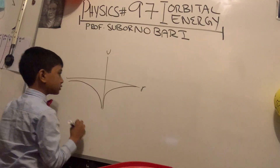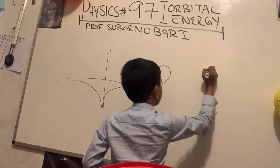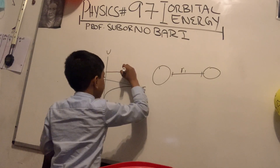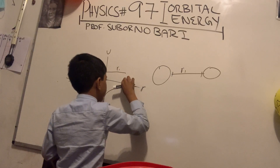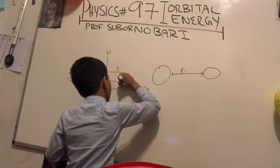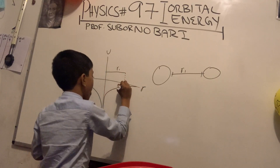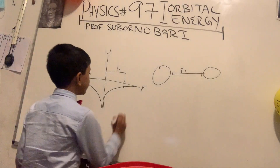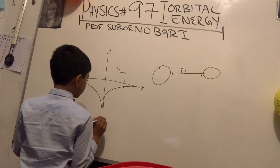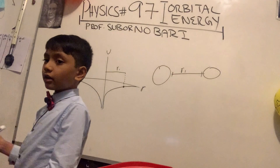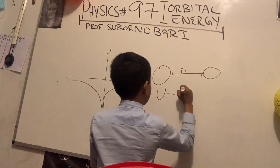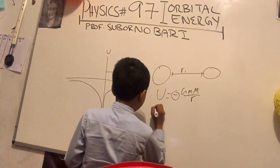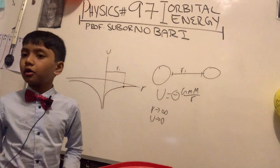Say that you have two objects that are a distance r1 apart — so that distance, I'm going to make a dotted line up to here. So now you can see that this corresponds to this point on the graph. Professor, why doesn't the graph go to the positive side if the radius decreases? Shouldn't it be in the first quadrant? We know that U equals negative GMm over r, so it will always be negative. However, as r approaches infinity, U approaches zero.